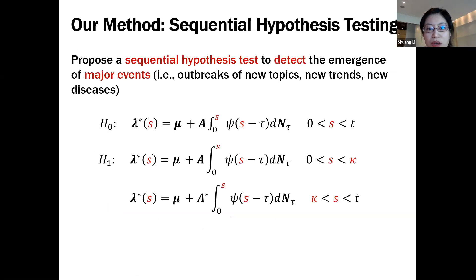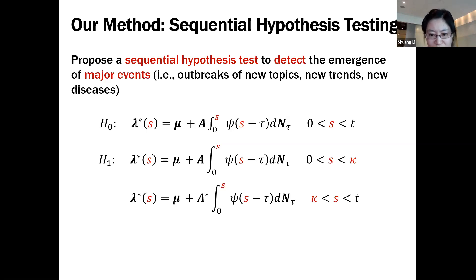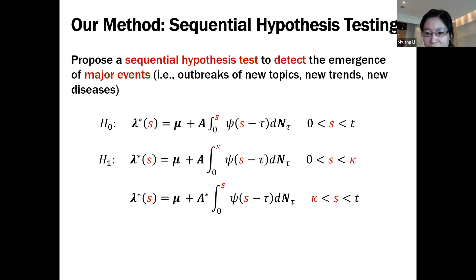Using statistical tools, we formulate the detection problem as a sequential hypothesis testing problem. Under the null hypothesis, there is no change and network events are generated by a multi-dimensional Hawkes process with influence matrix A. Under the alternative, there is a potential change point kappa. Before kappa, events are generated by the Hawkes process with matrix A. After the change point, events are generated by another multi-dimensional Hawkes process with another influence matrix A-star. We rigorously formulate this as a hypothesis testing problem and check online in a continuous-time fashion whether to reject the null hypothesis.